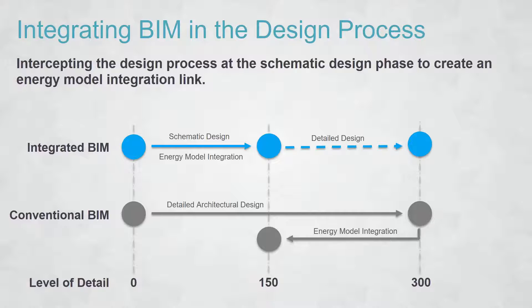What ends up happening is that a file goes from Level 0 up to about Level 300 — construction documentation detail — and it's passed to the energy modeler. You then need to reduce the level of detail back down to about Level 150, a more simplistic model. Either you build the model from scratch or you adapt it from BIM, but either way, there's work involved — and that's the current state of things.